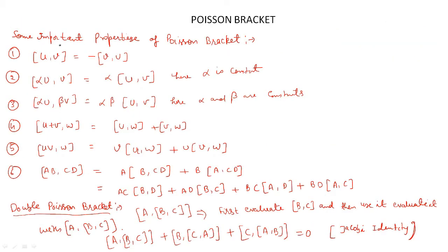Now there are some very important properties of the Poisson Bracket. The first property, which we have already discussed, is that the Poisson Bracket does not commute: {u, v} = −{v, u}. If there is a constant with any function in the Poisson Bracket, then it can be taken out from the whole Poisson Bracket.